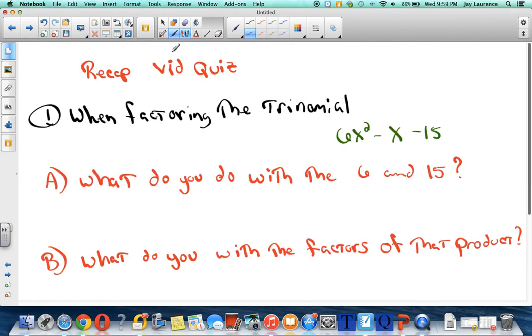Well, let's walk through one step by step. Here's your video quiz. Now it's a little different than other video quizzes, because I'm going to talk you through the answers. I want you to take detailed notes on this. So the question is, when factoring the trinomial 6x² - x - 15, what do I do with the 6 and the 15? Well, the first answer is I multiply them. Multiply them, 6 times 15.